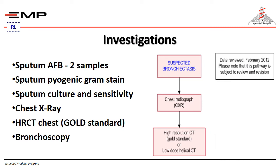If I am suspecting bronchiectasis, I will do a chest X-ray for the patient. If there are findings suggestive of bronchiectasis, the gold standard for diagnosis is high-resolution CT or low-dose helical CT. Remember, any respiratory symptoms not responding to antibiotics — I must exclude tuberculosis. I will obtain sputum for Ziehl-Neelsen staining for two samples, sputum Gram stain, sputum culture and sensitivity, and Lowenstein culture for TB, as well as bronchoscopy to examine the bronchi.